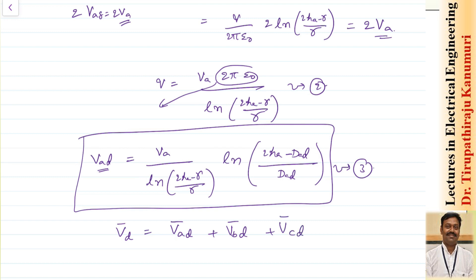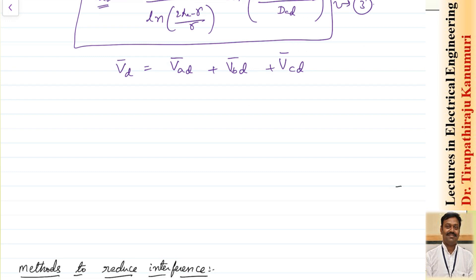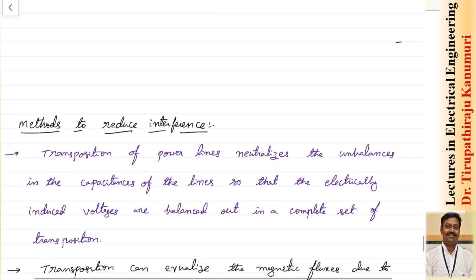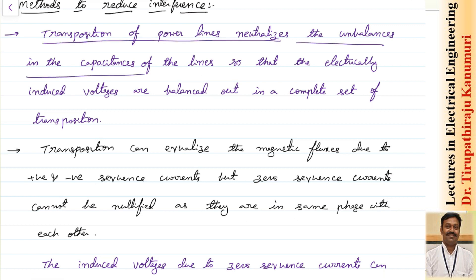Because of this, voltages are induced in the communication lines in each conductor. Similarly, I can calculate for conductor E using the same procedure. The question is how to decrease this value — how to make the electrostatic effect zero. This can be done by transposition of the power lines, which neutralizes the unbalance in capacitances, since all these effects come due to capacitance.